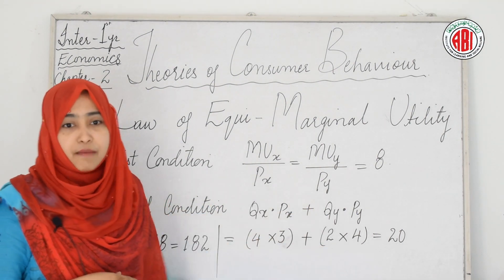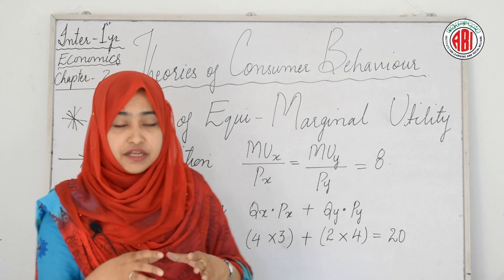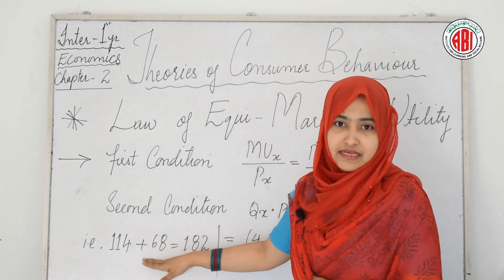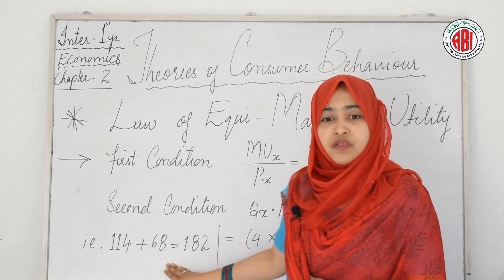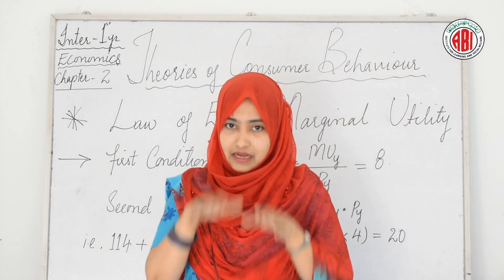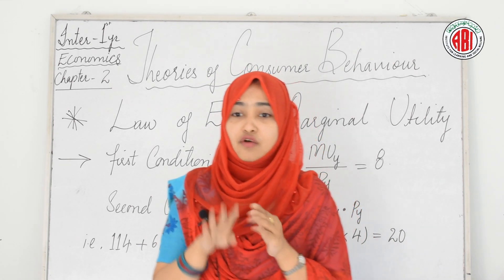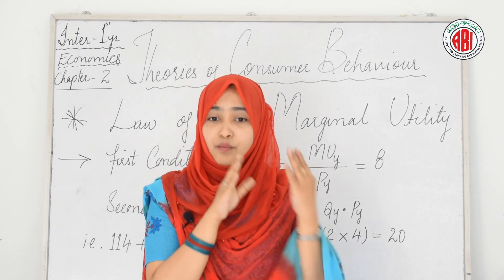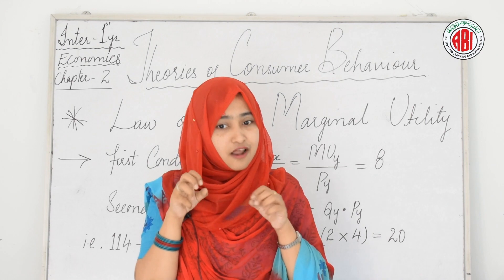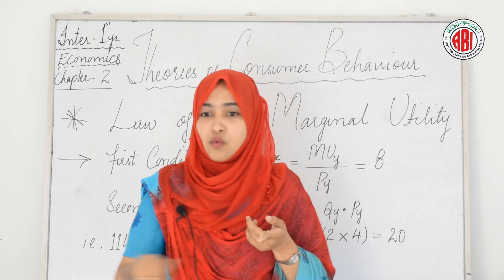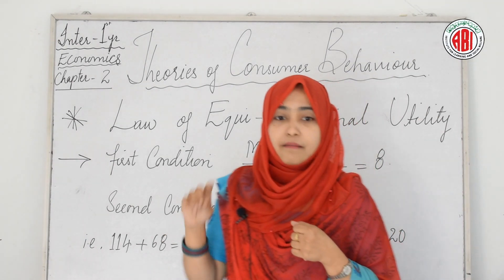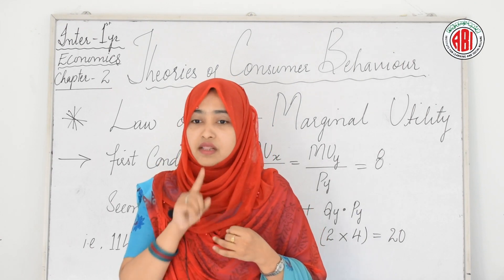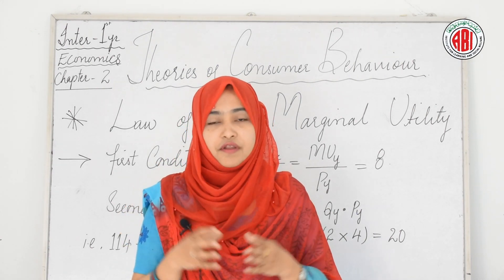Adding all the marginal utilities of both goods gives a total utility of 144 + 68 = 182 (which is the maximum). The consumer will be in equilibrium when buying 4 units of X and 2 units of Y, spending rupees 20 on them and obtaining a maximum total utility of 182. If he spends his income in any other way, all three conditions cannot be fulfilled simultaneously.